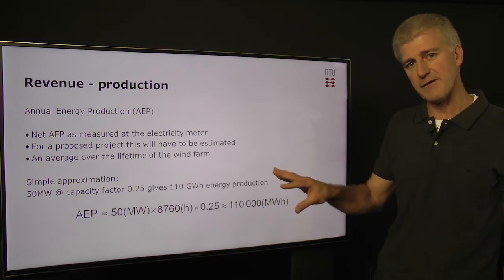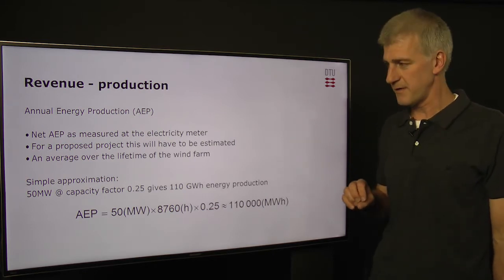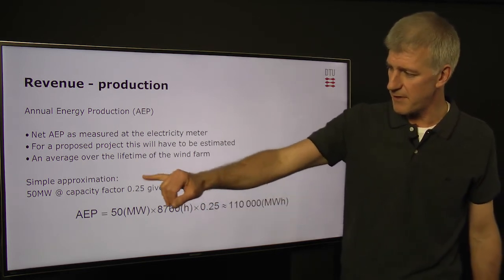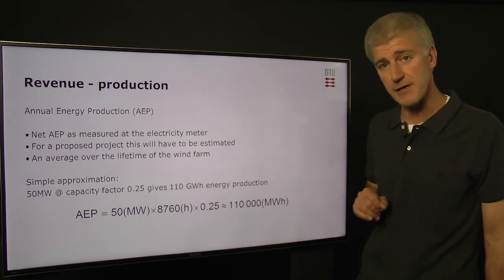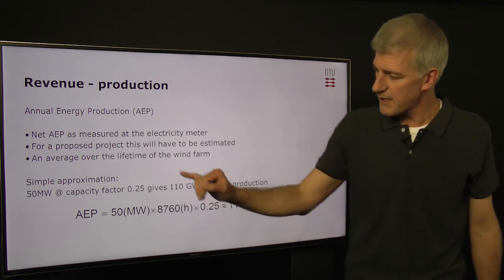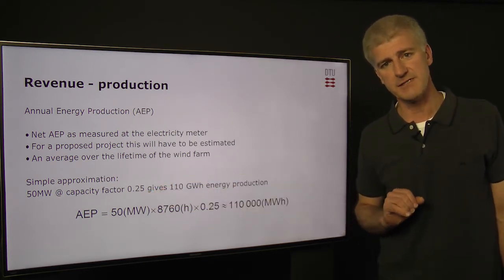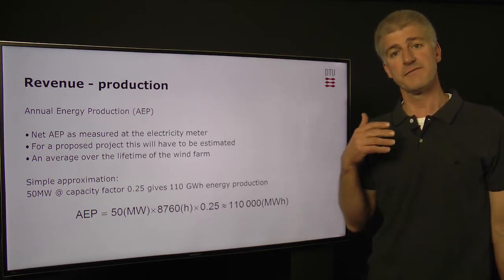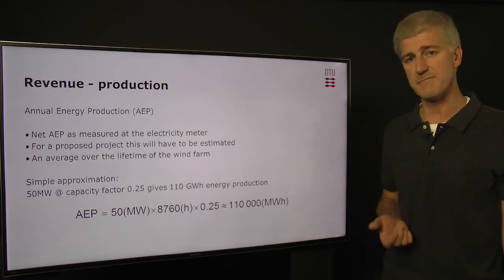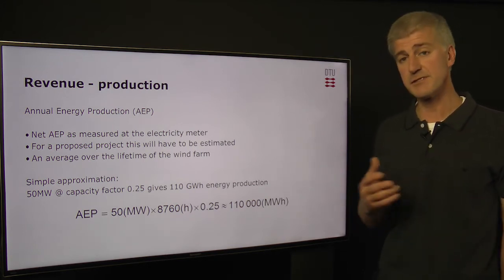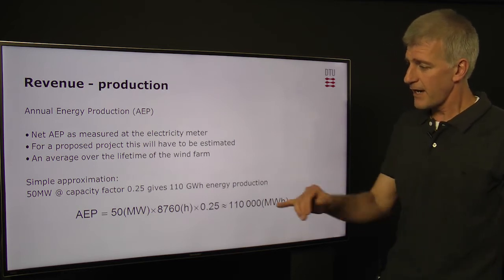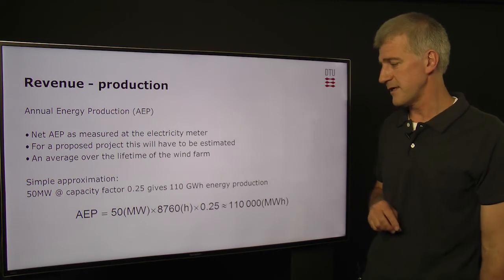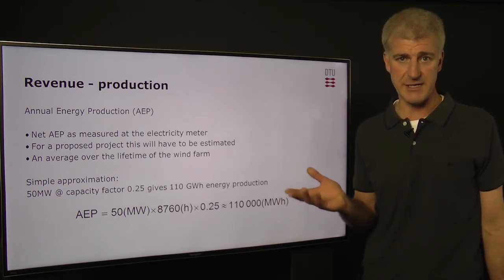Here, we're just going to look at a very simple approximation for this AEP calculation. What we need is the capacity of the wind farm — in our case, let's say 50 megawatts — and we're going to use a capacity factor of 25%. This means that, on average, the wind farm will be producing at full capacity for 25% of the time. Using these figures, this gives approximately 110 gigawatt hours of electricity generated in a year.